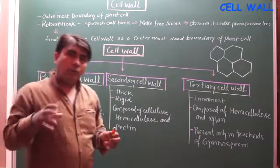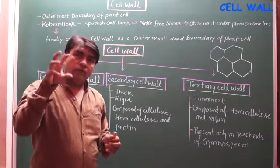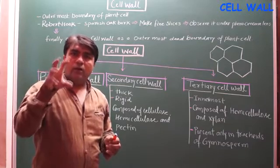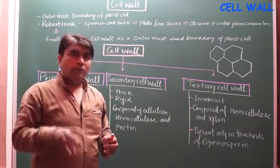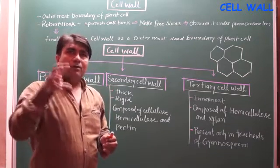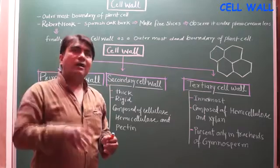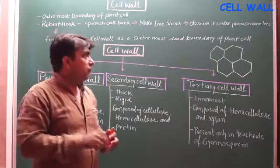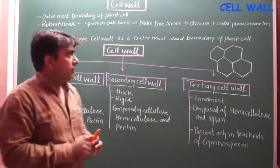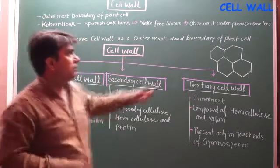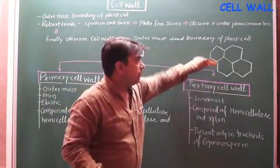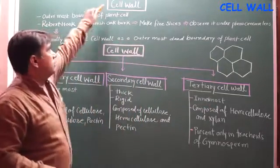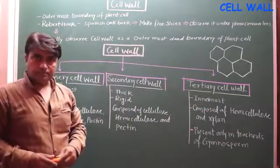A plant is composed of very tiny small compartments, or rooms, that he called 'cellar.' And he finally observed only the outermost boundary, which we call the cell wall.